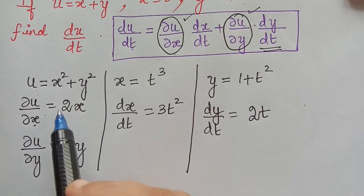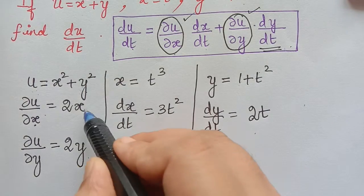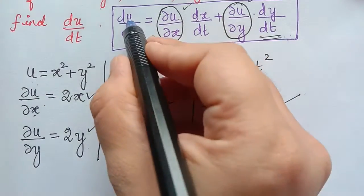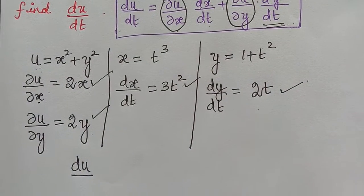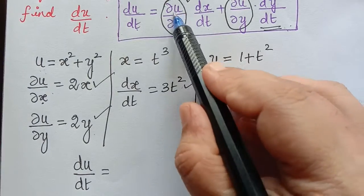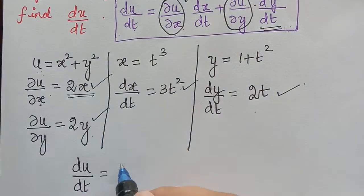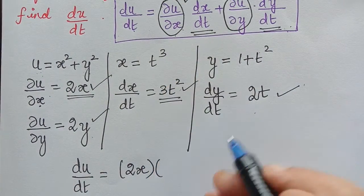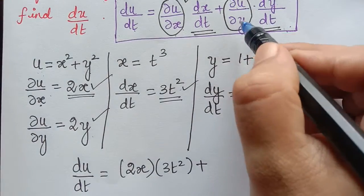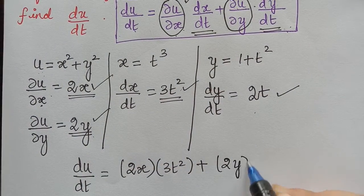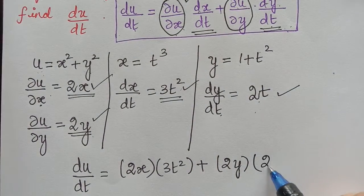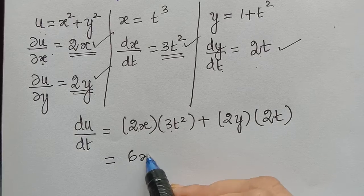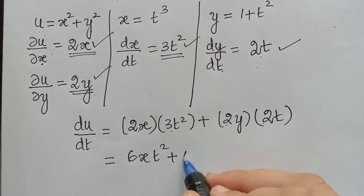Now we have obtained all the required components to substitute into the formula. Therefore, du/dt equals ∂u/∂x times dx/dt plus ∂u/∂y times dy/dt, which gives 2x times 3t squared plus 2y times 2t. On simplifying, this becomes 6xt squared plus 4yt.